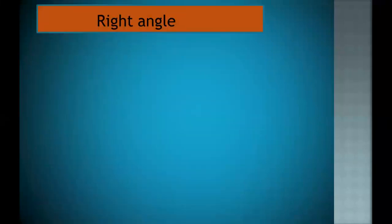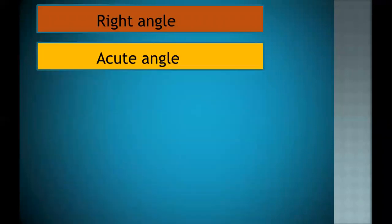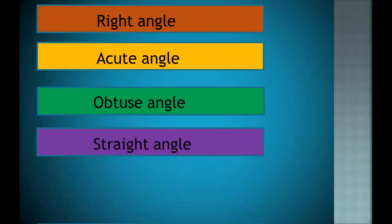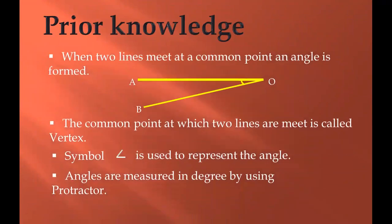Now we will discuss the angles of different types one by one. We will discuss the right angle, then acute angle, obtuse angle, straight angle and reflex angle. When two lines meet at a common point, an angle is formed. The common point at which two lines meet is called vertex — here our vertex is O. This symbol is used to represent the angle, and angles are measured in degrees using a protractor.